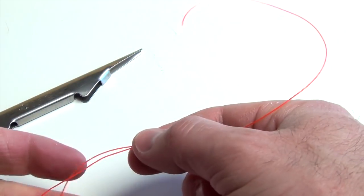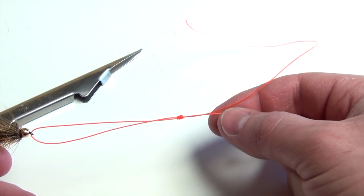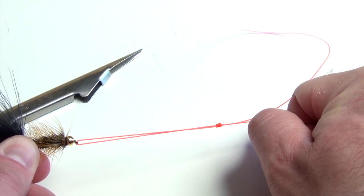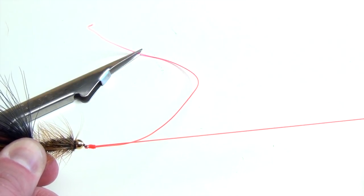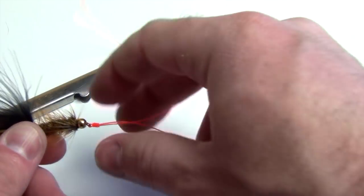Then I'm going to take the fly and the level line, and I'm going to pull the level line so that the knot slides all the way down to the eye of the fly.